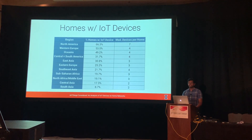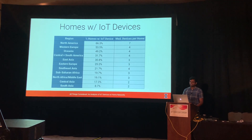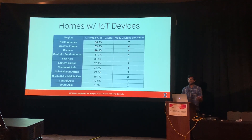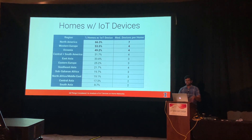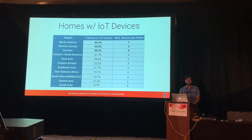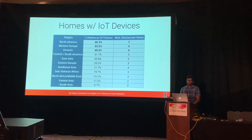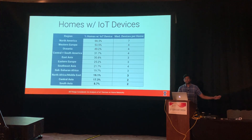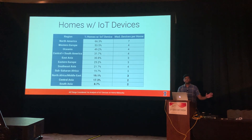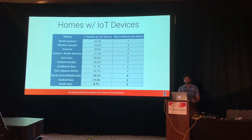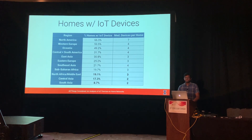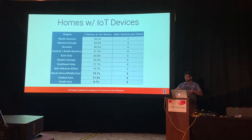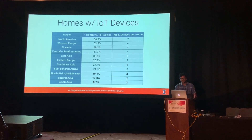Let's take a look at where IoT devices are. Here is a table outlining home IoT devices per region, sorted by the fraction of homes in each region that have an IoT device. At the top are regions like North America, Western Europe, and Oceania — over two-thirds of North American homes contain at least one IoT device, with a median of seven devices per household. On the other end are regions like South and Central Asia and North Africa/Middle East, where only 8.7% of homes in South Asia have at least one IoT device and the median is just two — basically just the computer performing the scan and the router.